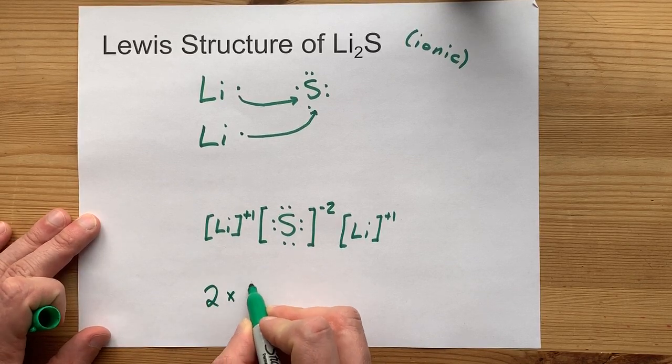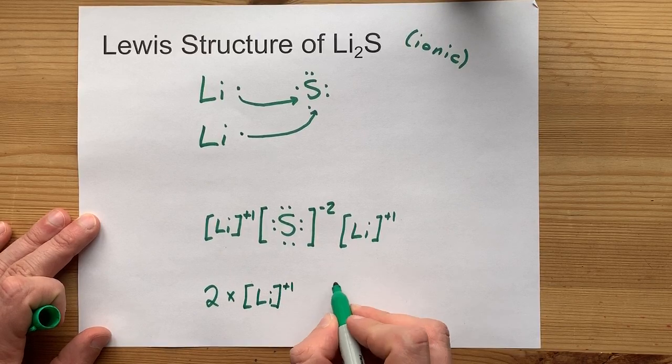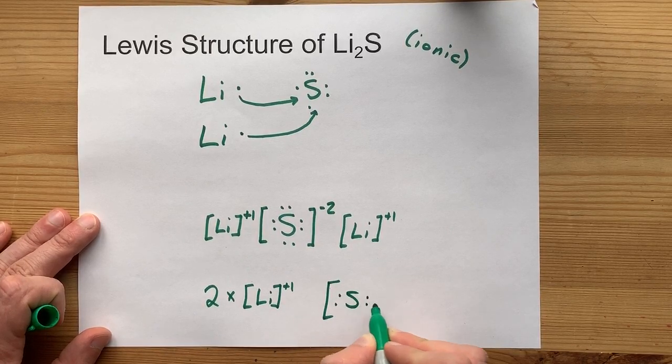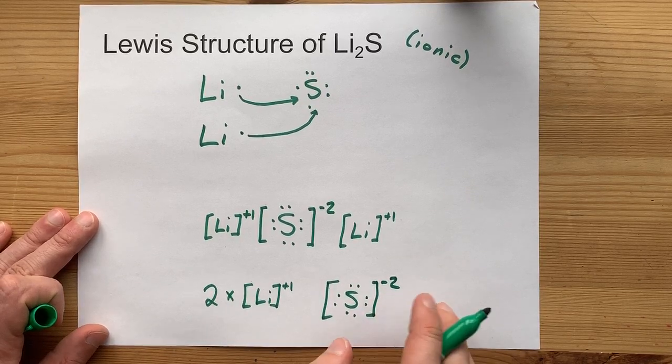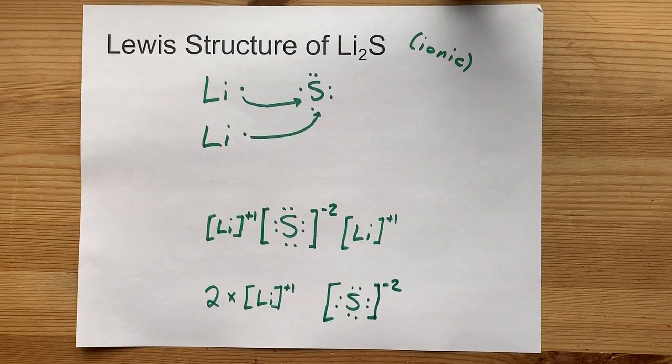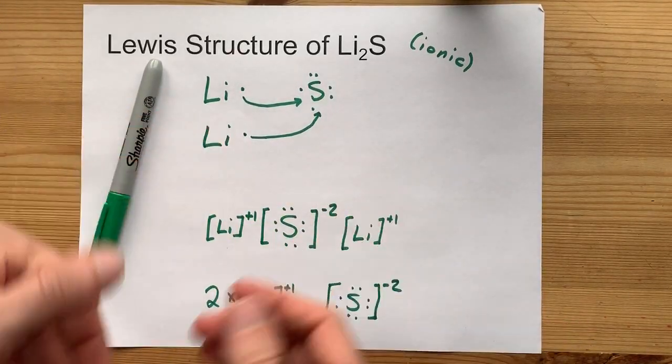Now, some teachers will allow you to do two times Li. So you don't have to write it out twice. You'll still have to draw the sulfur there for yourself. Find out which one your teacher wants to see and give it to them the way they want it. You know, that's our job as students, right? Best of luck.